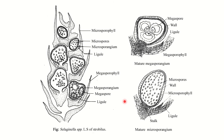Remember: the position of the sporangium is either cauline or foliar, so the initials are situated either on the axis or on the leaf respectively. The development of sporangia and formation of micro and megaspores is similar up to the formation of spore mother cells. The development is of eusporangiate type, taking place with the help of a row of sporangial initials.